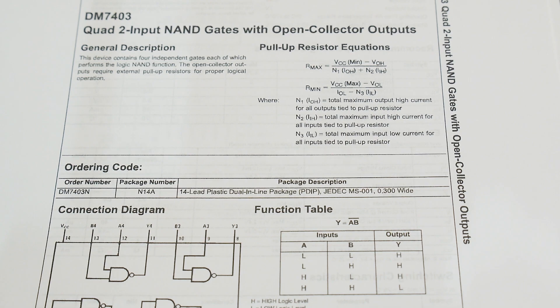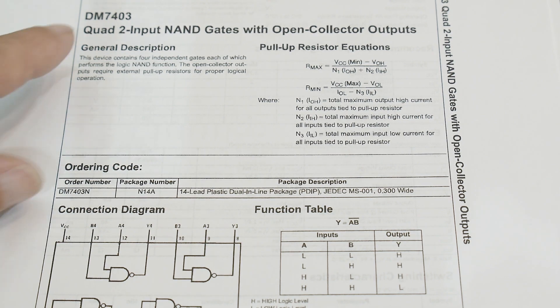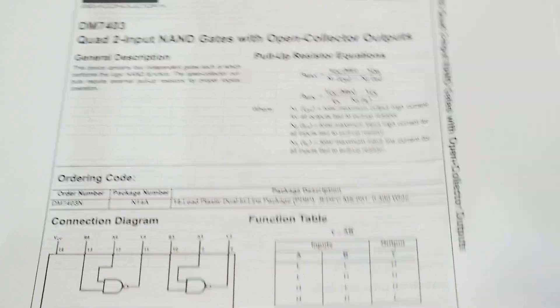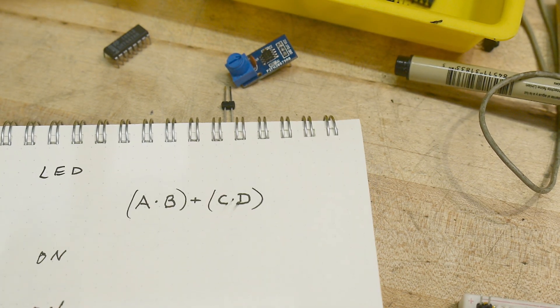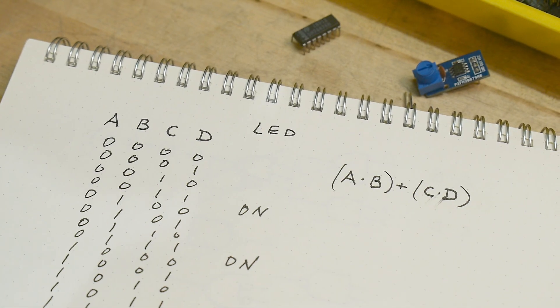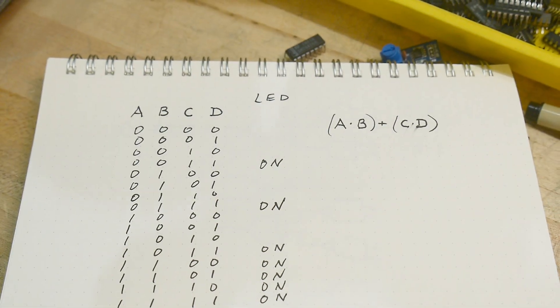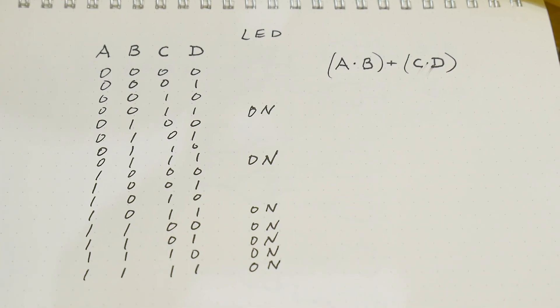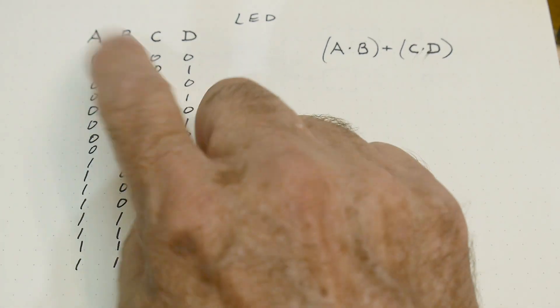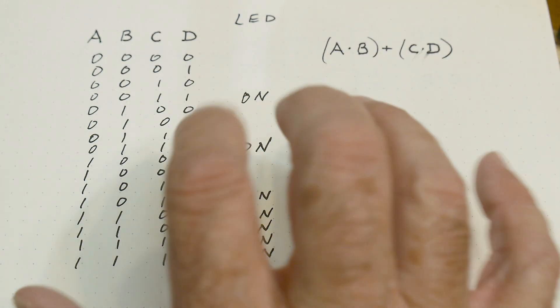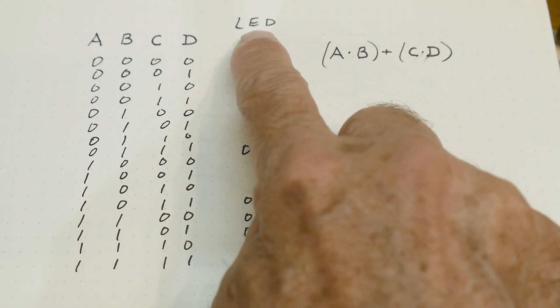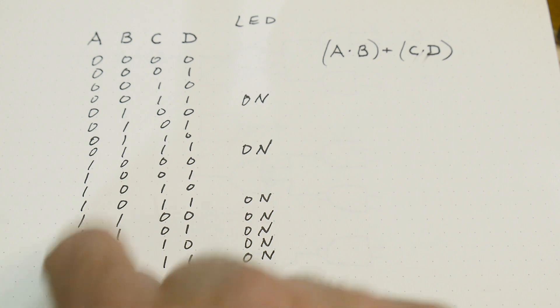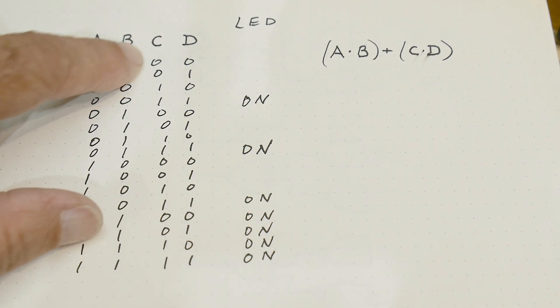7403. Let's talk about 7403 because it looks exactly the same, but we're going to think about this as an actual problem that we would have to do maybe back in the day. Let's say the boss gave us this problem: we have some sensors A, B, C, and D, and these sensors can be low or high. I want this truth table, I want an LED turned on when these sensors are in these states.